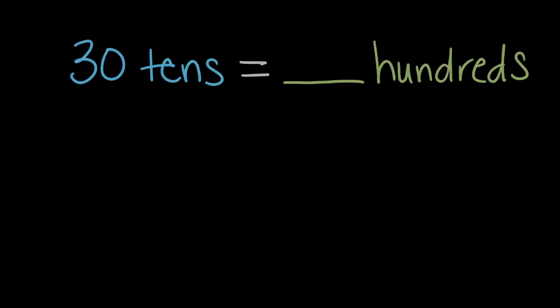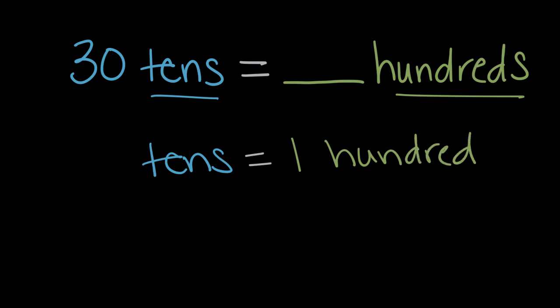Here's another one. Thirty tens equals how many hundreds? So this time we're looking at tens and hundreds. So let's think about how tens and hundreds relate. How many tens are in one hundred? How many tens are in one hundred? And we could write one hundred the word or the number one hundred. Well to figure that out, if we don't know already, we can count tens. We can count by tens and see how many tens it takes us to get to a hundred.